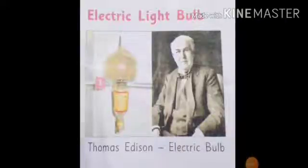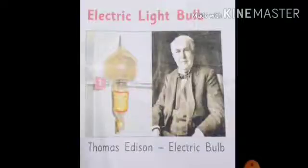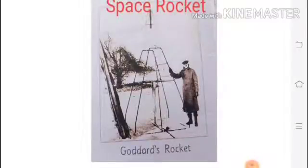Electric light bulb: Thomas Alva Edison, an American, is considered one of the greatest inventors of all time. In 1879, he invented the electric light bulb. Edison's basic setup for a light bulb involved a thread called a filament inside a vacuum-sealed glass bulb. Low current electricity passes over the filament, causing it to glow and give off light. His creation has changed people's lives.